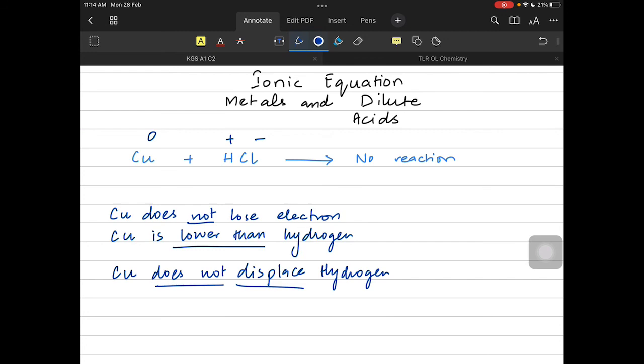So I hope this idea is clear to us that some metals are higher than hydrogen in the series and they do react in dilute acids. Some are lower than hydrogen, so they do not react. I hope we are going to keep remembering the idea in the next coming videos. Thank you guys.